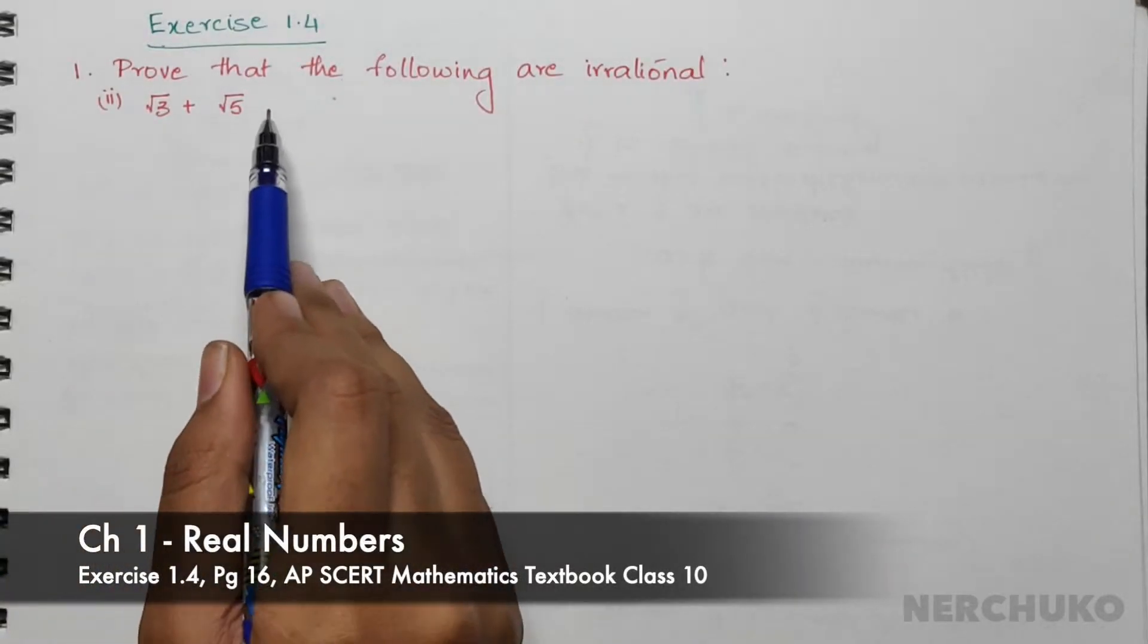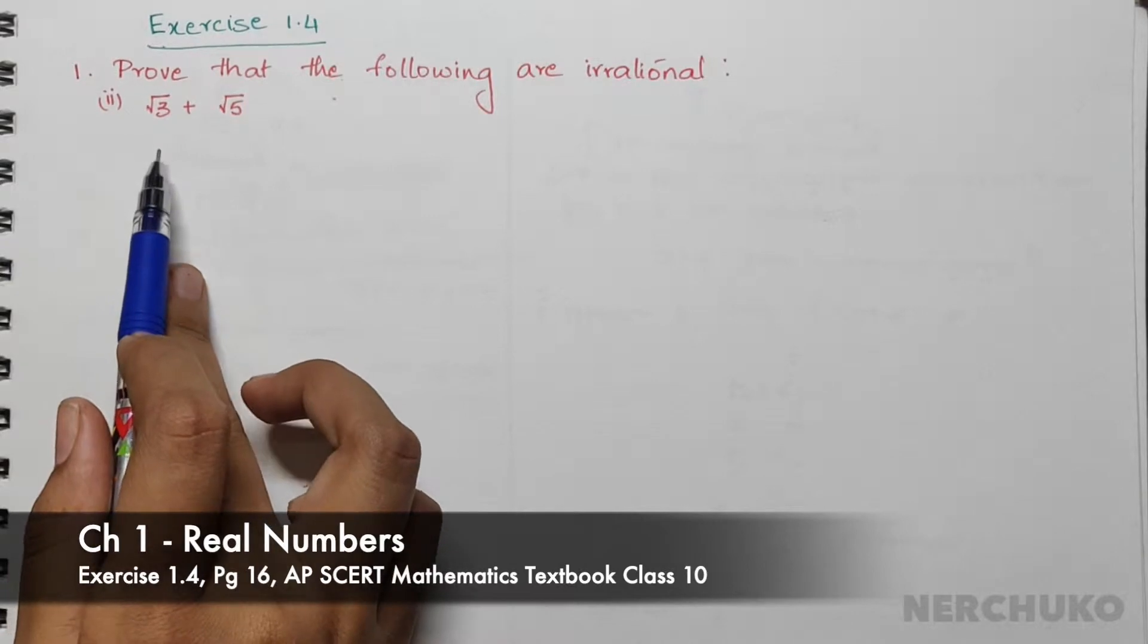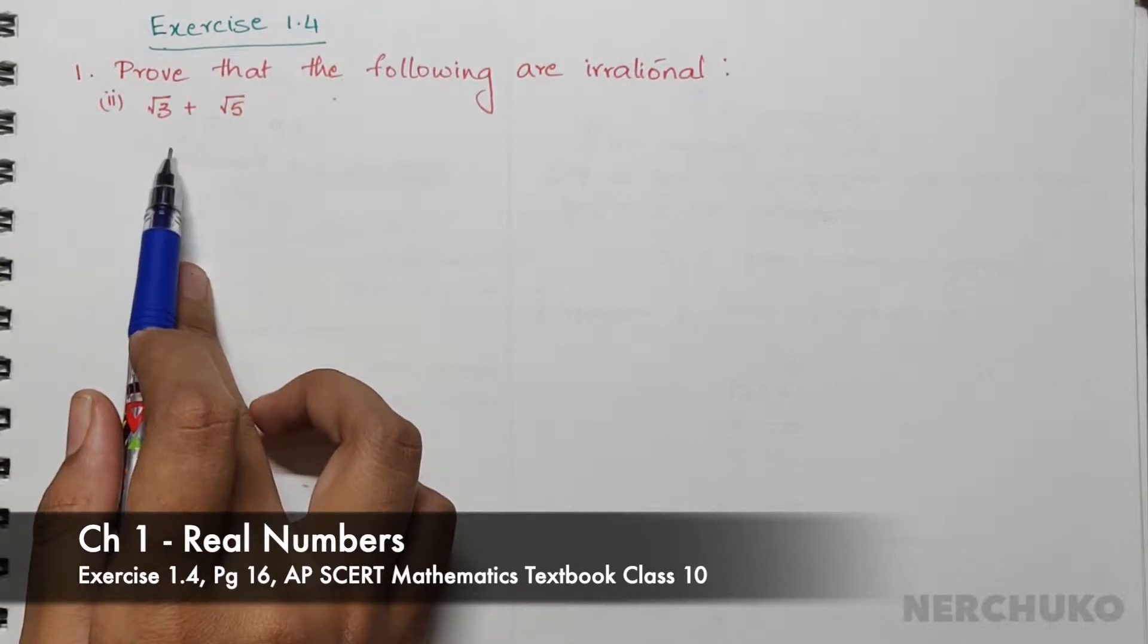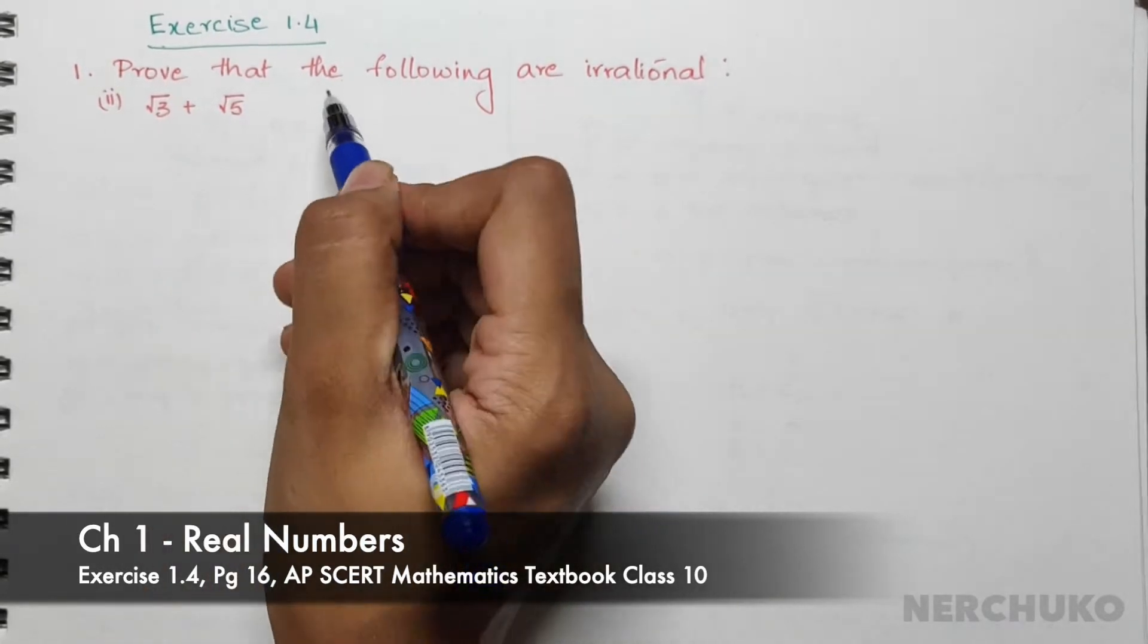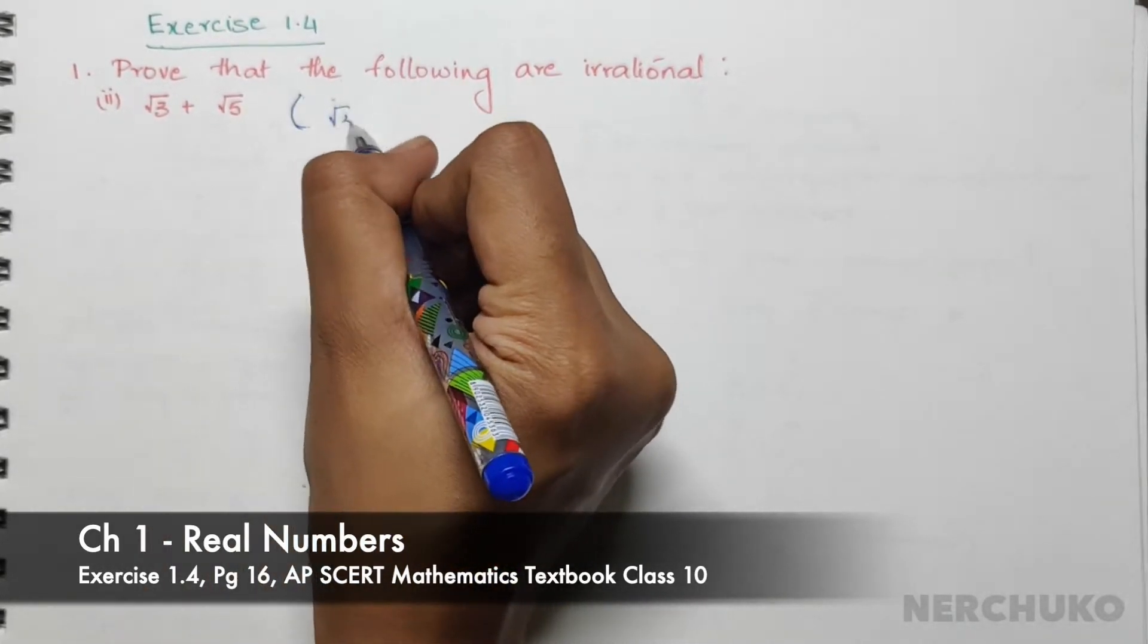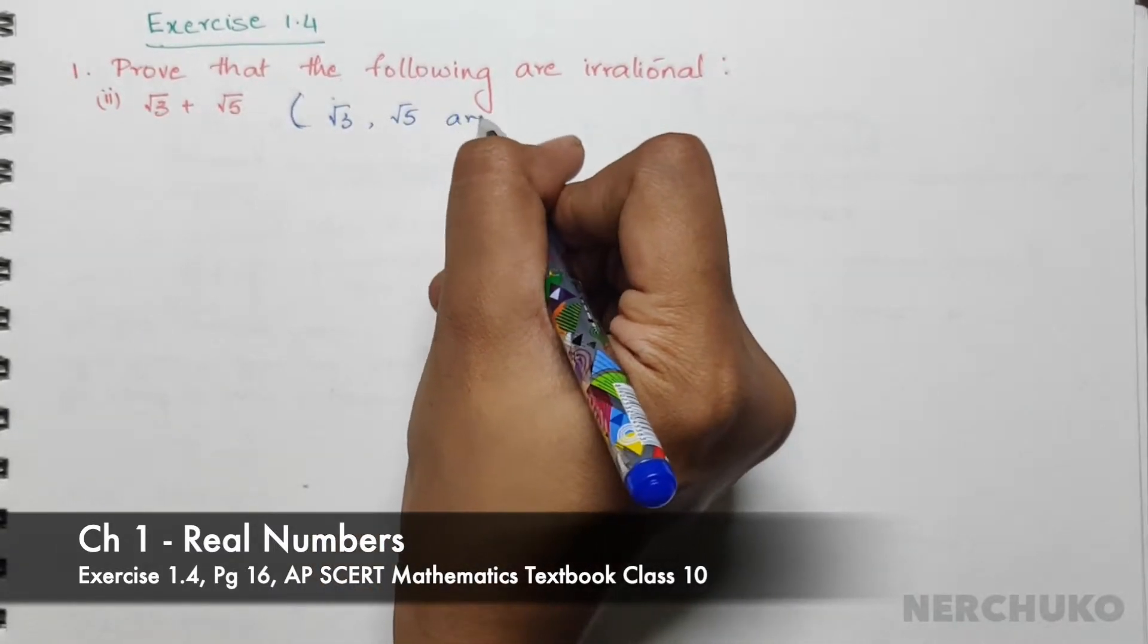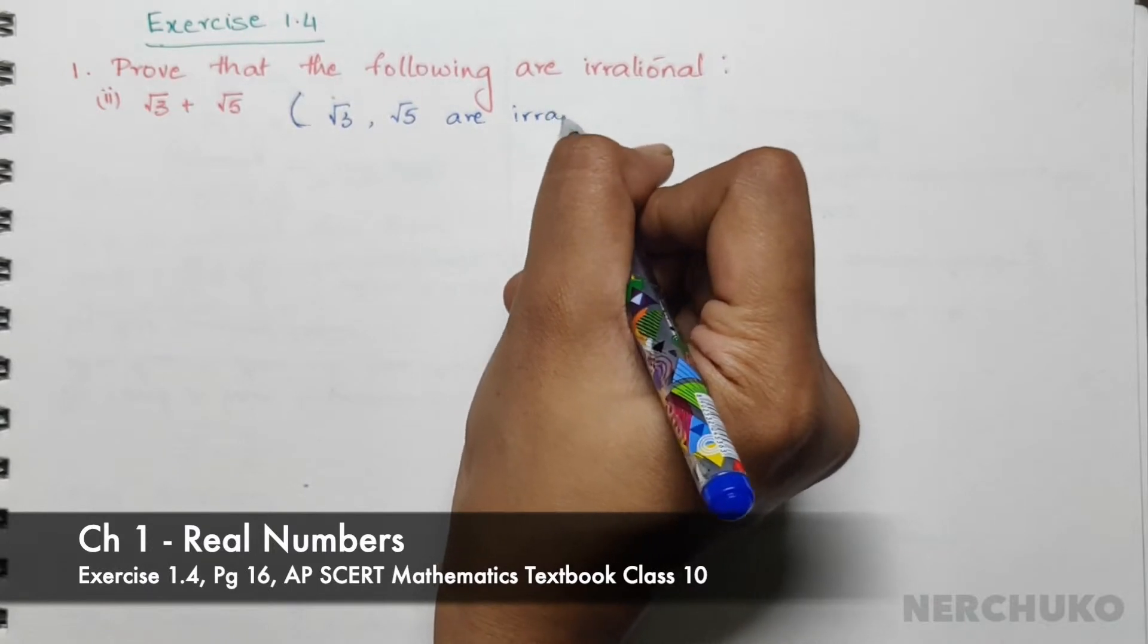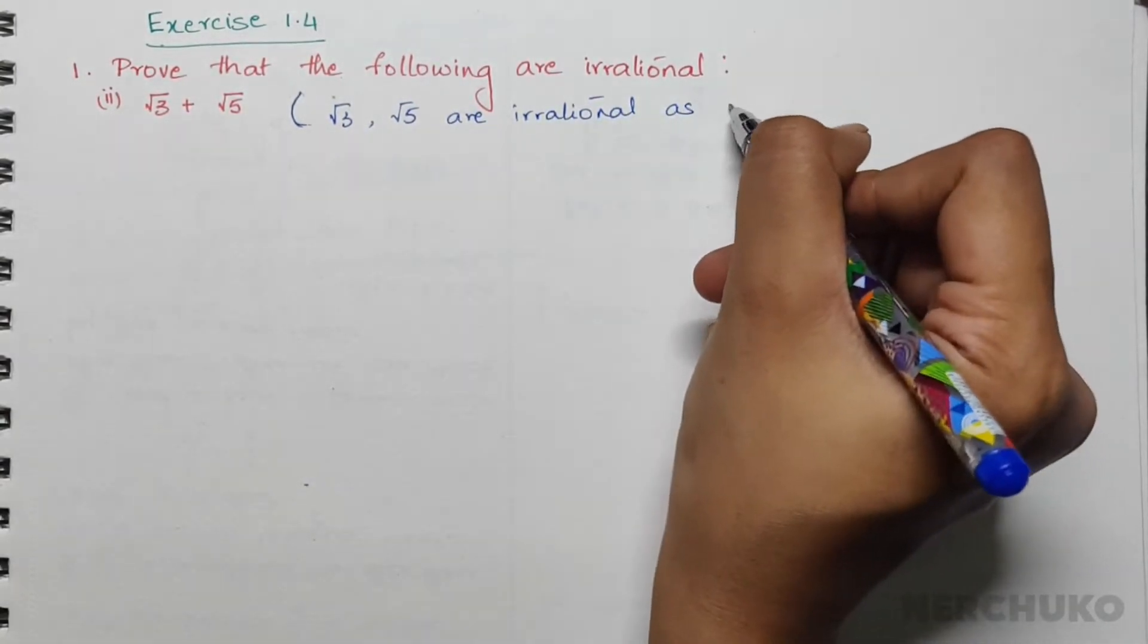The next problem is to prove that the following is irrational: we have the number √3 + √5. For this problem, √3 and √5 are irrational as separate numbers.